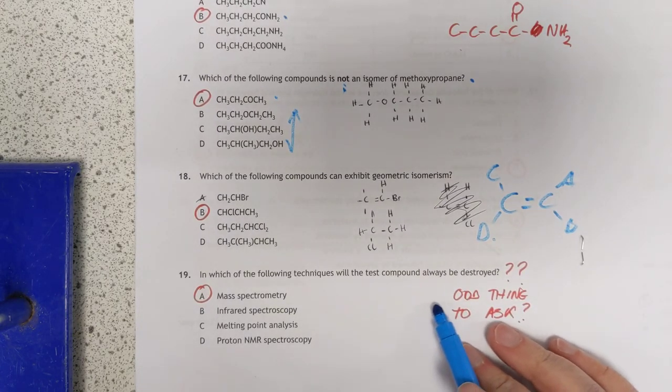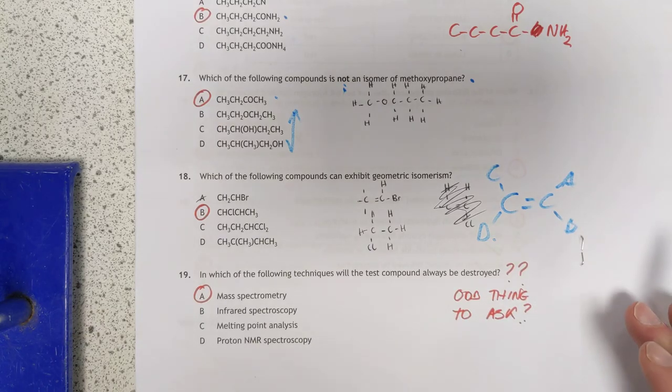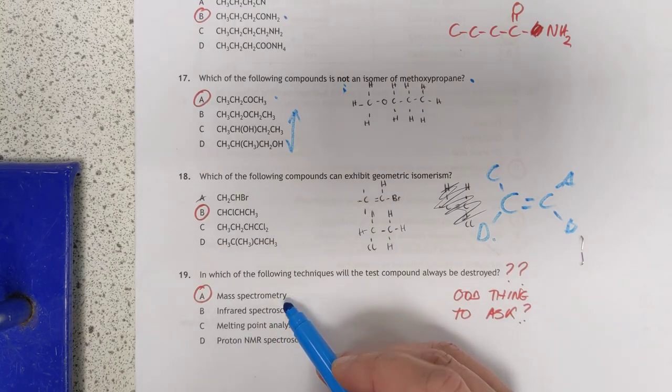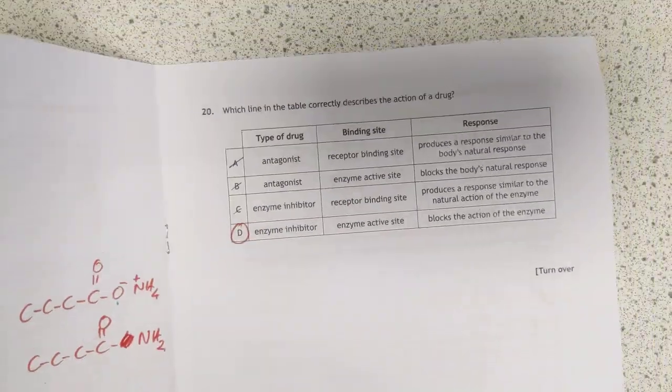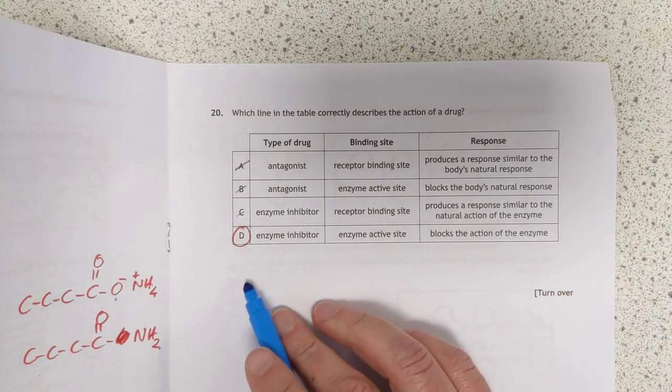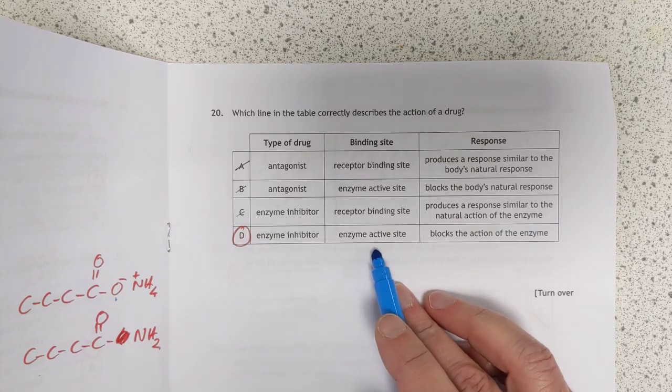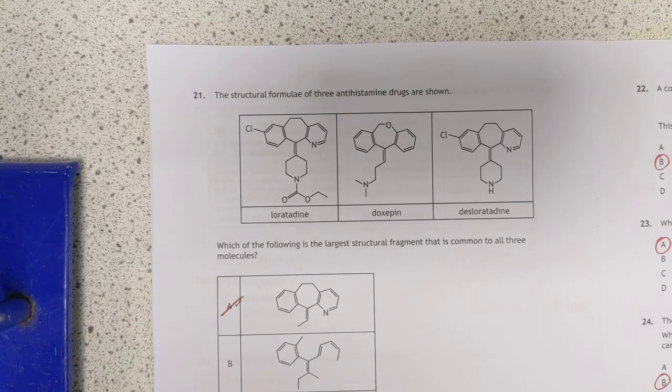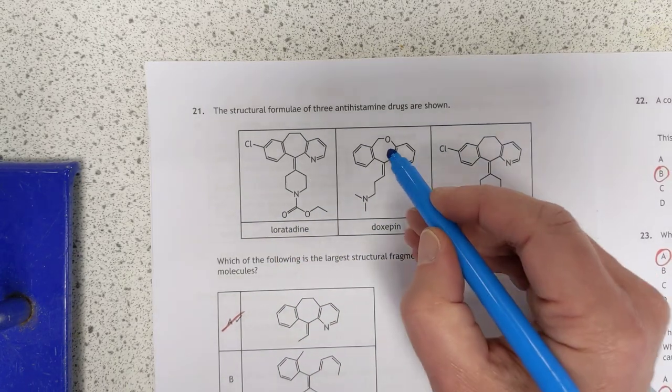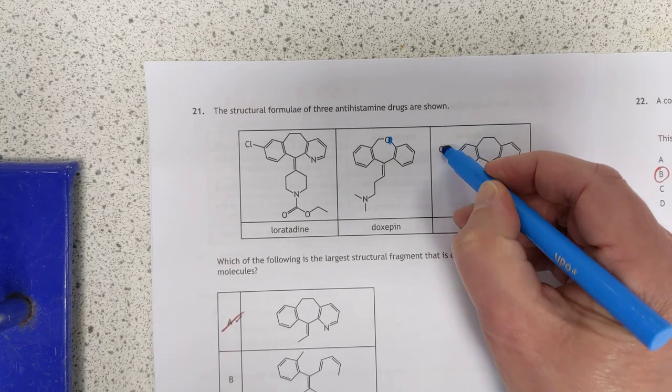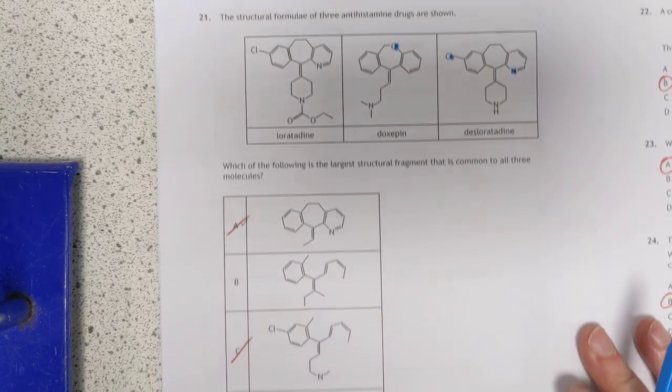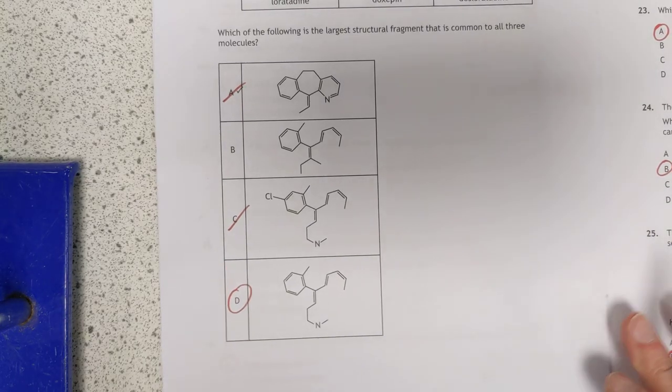Now, number 19. It's quite a dark question, this. Which of the following techniques will the test compound always be destroyed? Well, I suppose the answer to that is mass spectrometry, because you break the molecule apart into chunks. Although there's also the molecular ion, which has just got an electron knocked off it, but we'll let that slide. And this one here, I reckon it's a D. The enzyme inhibitor acts at the enzyme site, and it blocks the action of the enzyme. The only one that seemed to be correct to me. This was a nice problem-solving on the pharmacologically active part of these molecules. Because if you do some detective work, all three of these are active. Obviously, the oxygen is not needed, because it's not there. The chlorine is obviously not needed. The nitrogen is not needed either. And various parts down here. Basically, I came to the conclusion that D was correct. But as I said, I could be wrong. I could entirely be wrong.